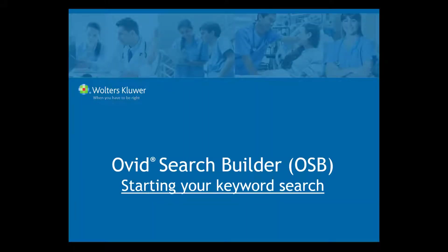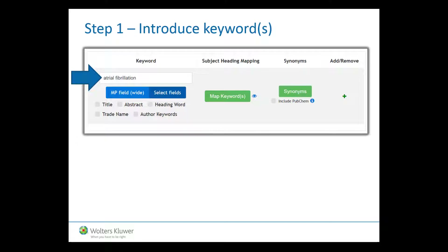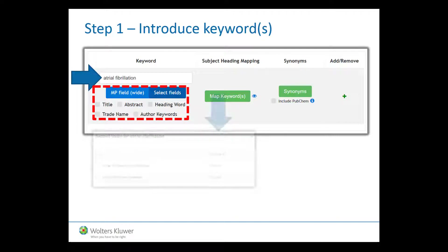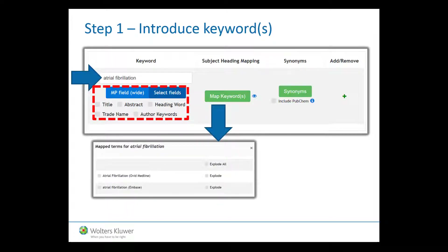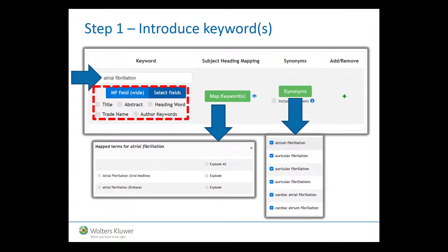Let's quickly highlight how to start your keyword search in the Ovid Search Builder tool. The first step is to enter your keyword into the space provided. Decide whether to undertake a wide search for the keyword in the default MP fields of the database. Alternatively, choose to search in selected database fields. Click on the green button Map Keywords to select the appropriate controlled vocabulary term, then click on the green button Synonyms to automatically retrieve all the related synonyms.